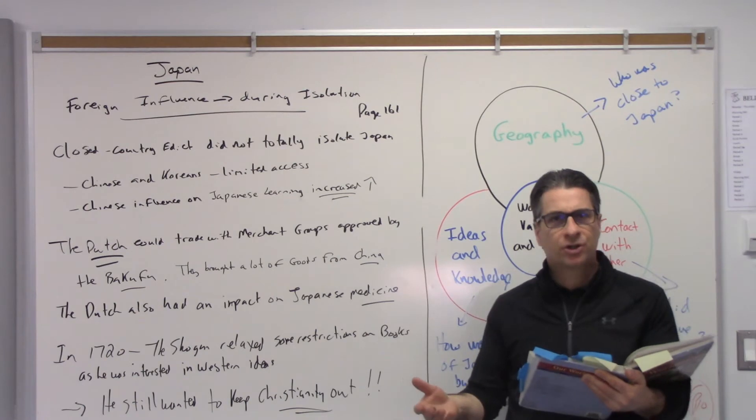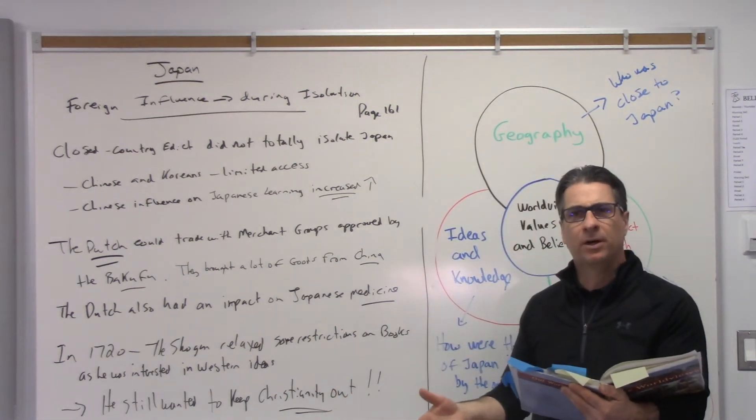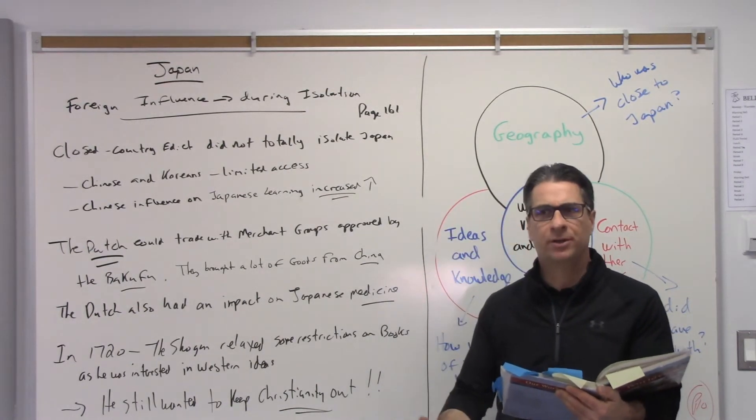Eventually some of the Dutch were allowed to trade, and they became the biggest trading partner because they weren't trying to push the religion onto Japan. They just wanted to trade the goods.